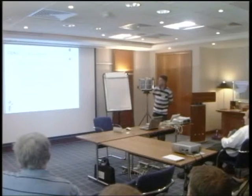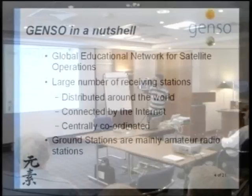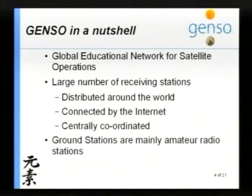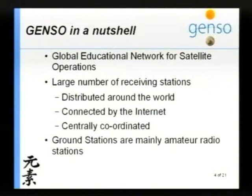GENSO — it's the Global Educational Network for Satellite Operations. In a nutshell, it's a really large number of receiving stations, also transmitting but mainly receiving. It's distributed around the world, connected by the internet, and centrally coordinated. You use multiple stations around the world to track satellites, working together. The ground stations are mainly amateur radio-like stations — not all, but in that direction. That's an important input for the project.